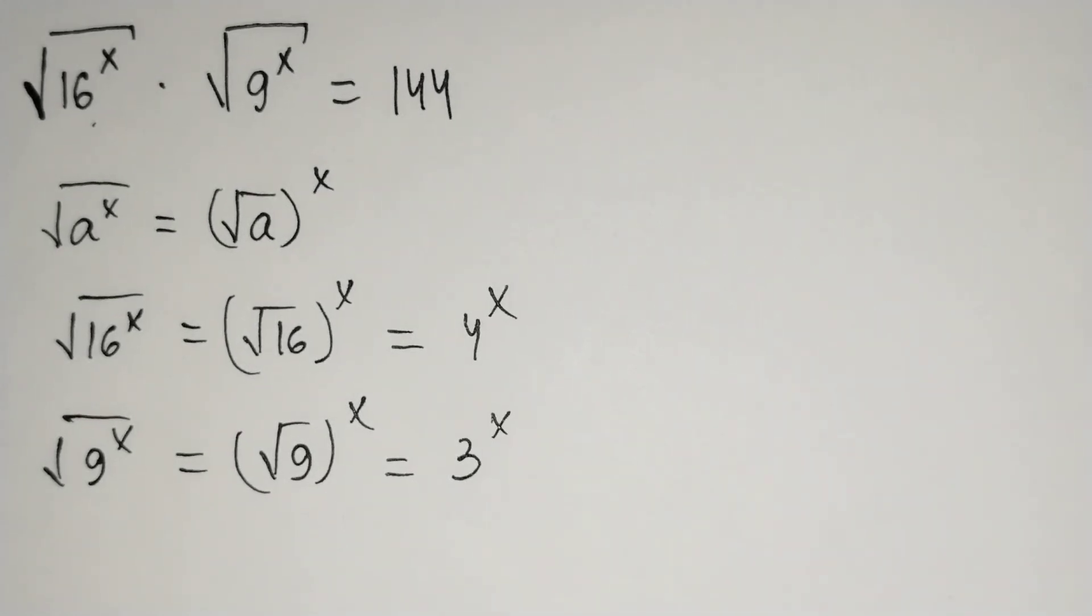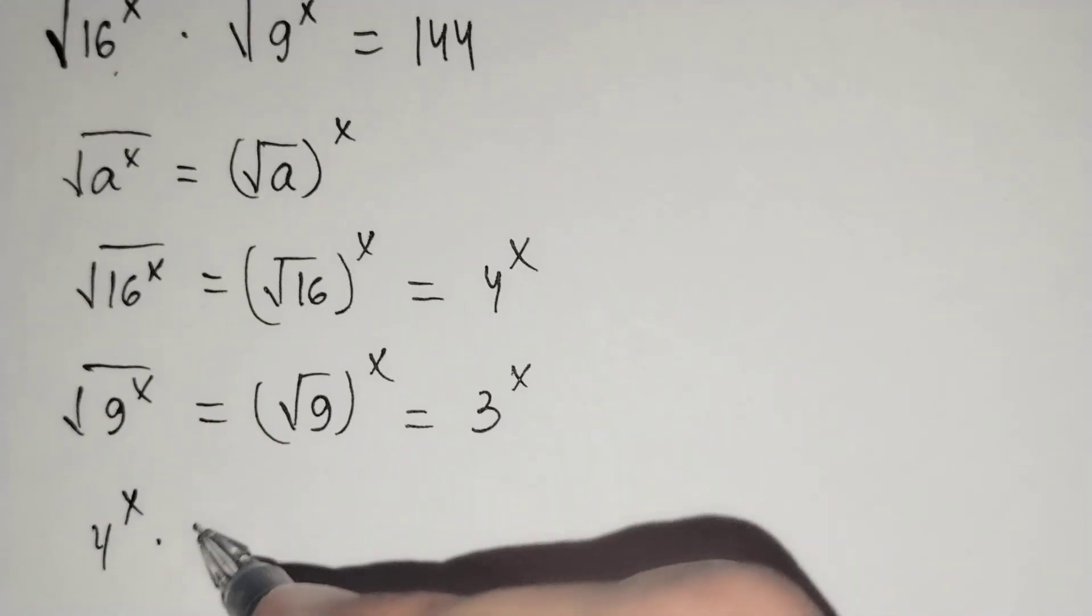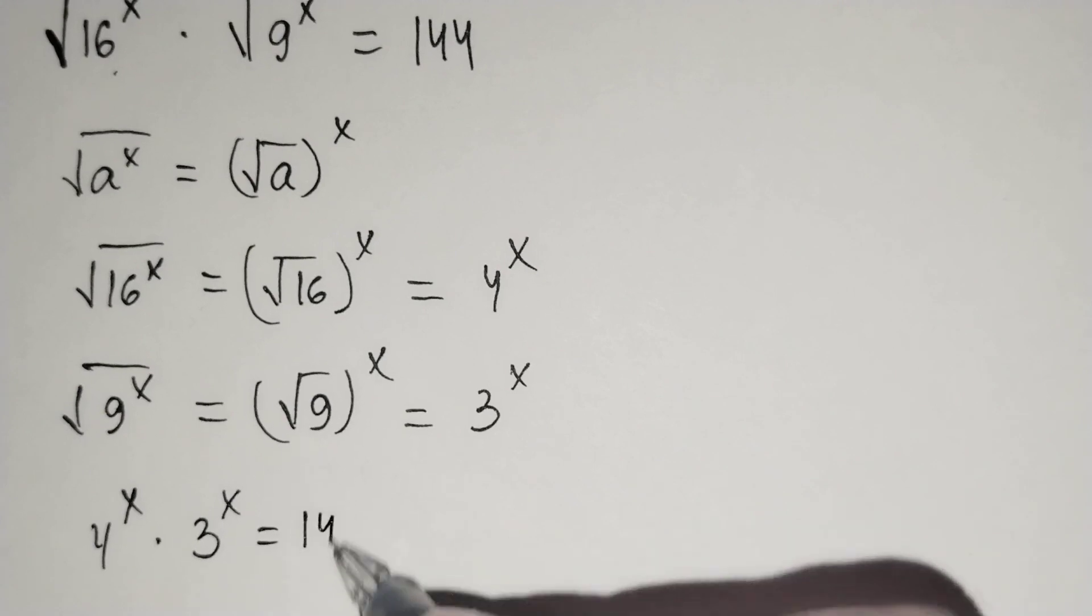And let's put this above. 4 power x times 3 power x equals to 144.